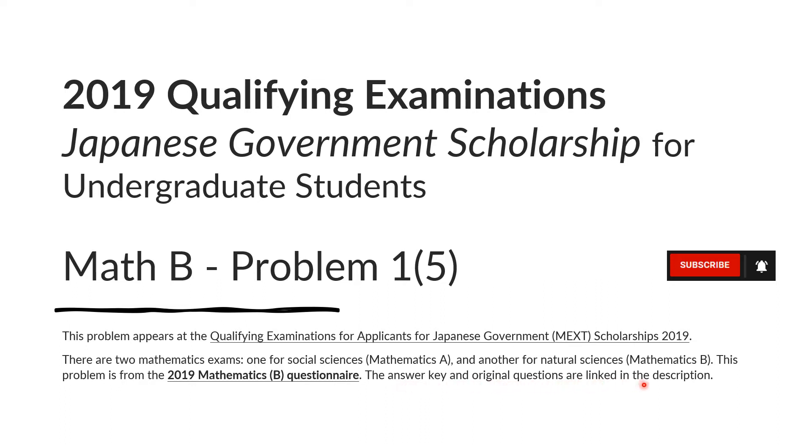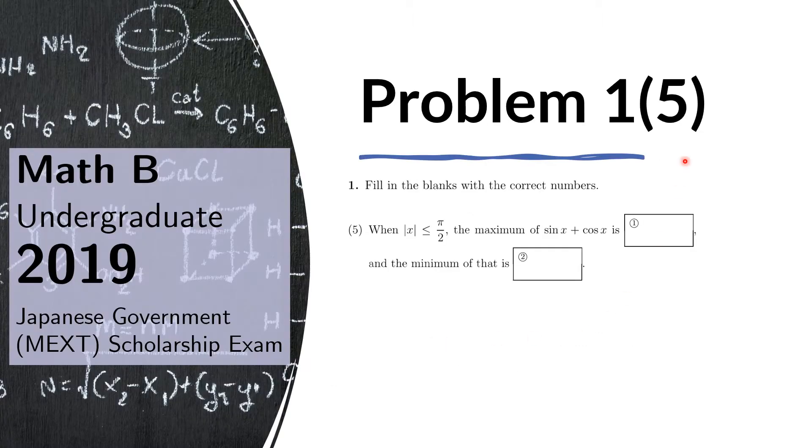The answer key and the original questions are linked in the description. Problem 1(5): When the absolute value of x is less than or equal to π/2, the maximum of sin x + cos x is blank and the minimum of that is blank.